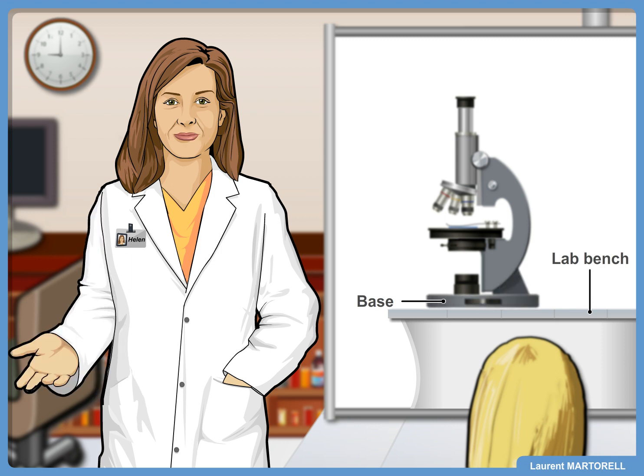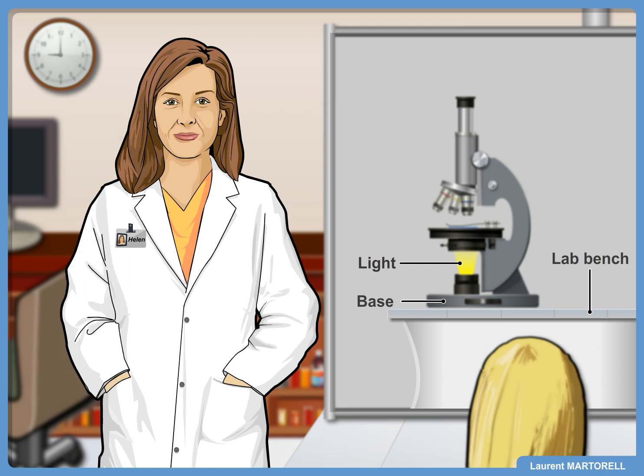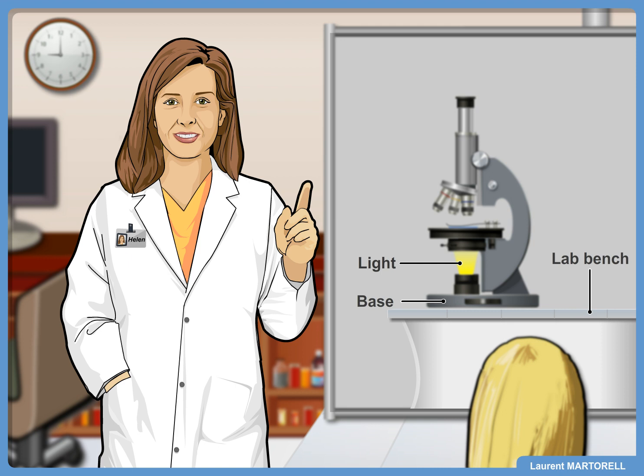One of the most important parts of a compound light microscope is the light source. The power switch is found at the base of the microscope, so make sure to switch it on. Sometimes you can adjust the intensity of the light using a slider.